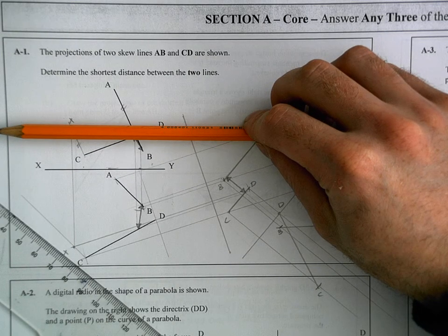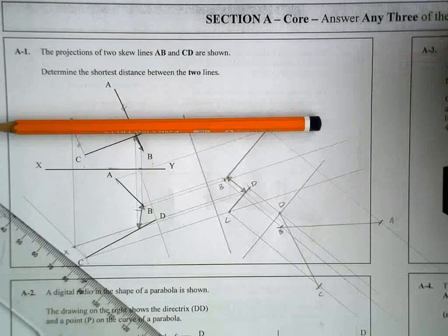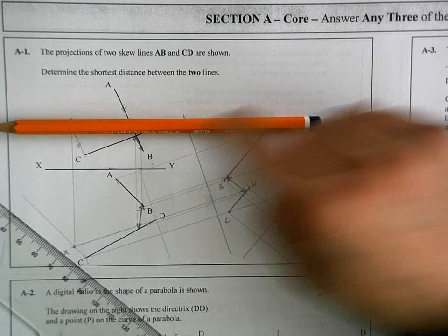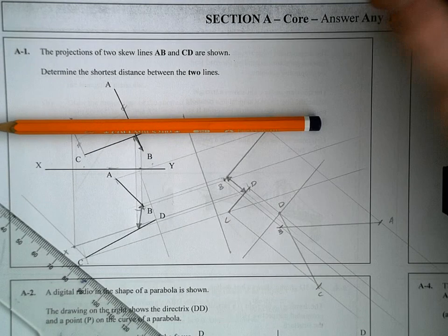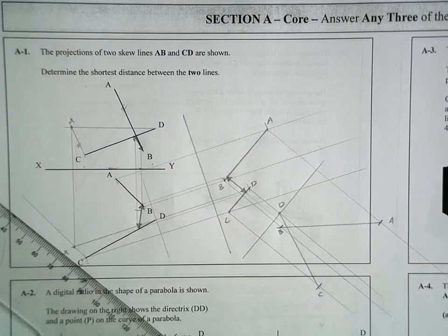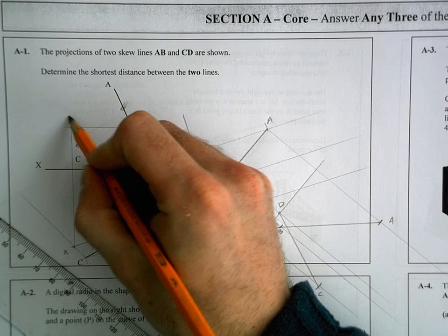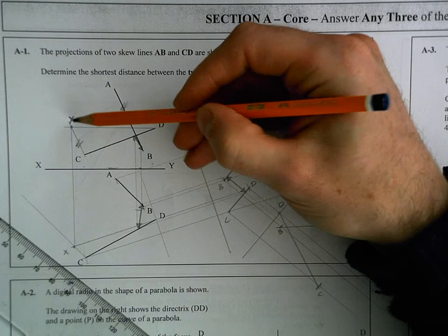Then you have to replicate the angle of the opposite skew line from the other end of that line. We're working with line CD, which means we drew our horizontal from D. We have to replicate the angle of AB from point C, so those two lines are parallel. Where they intersect, just label it off as point X.